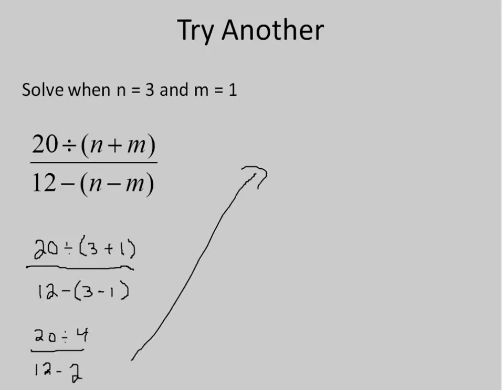I'm going to come up to here. 20 divided by 4 is 5. 12 minus 2 is 10. And I'll simplify that. I divide the top by 5 and the bottom by 5 for my final result of 1 over 2.